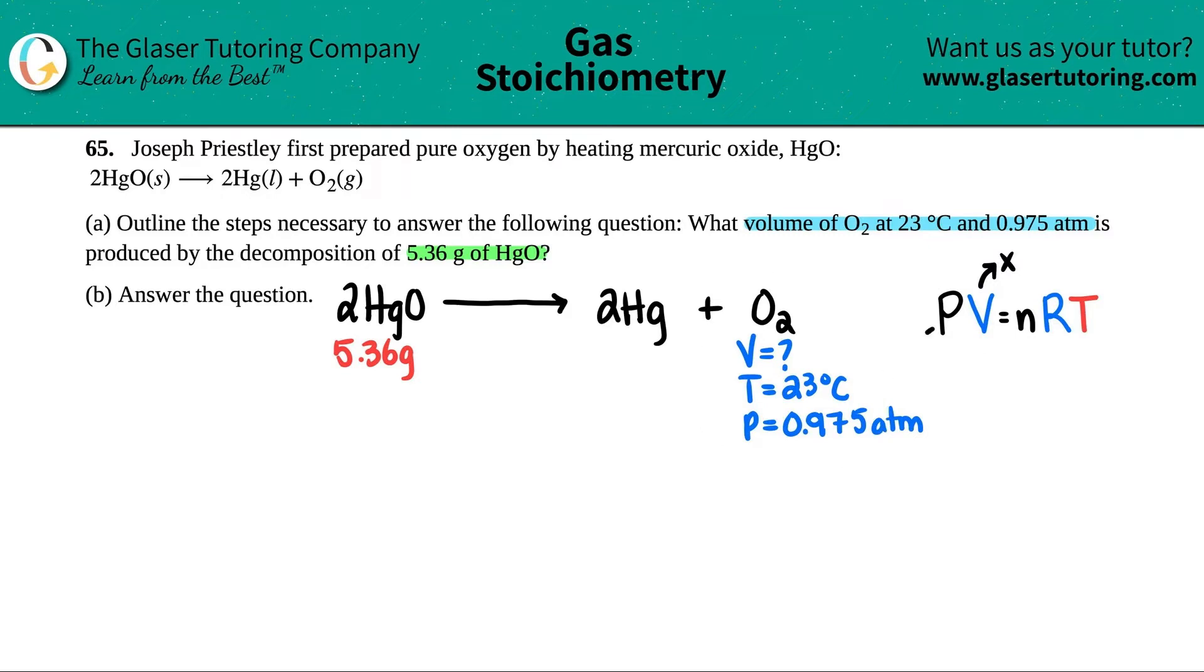We have the pressure of 0.975 atm, so that's good. Remember, all of these units are locked into that R value, which is 0.0821. The units for the R value are atm times liter divided by mole times Kelvin. That's why the pressure has to be in atm. The volume that comes out is going to be in liters.